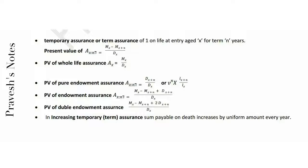PV of whole life assurance: Ax equals Mx divided by dx. PV of pure endowment assurance: A[x:n] equals D(x+n) divided by dx, or vⁿ × l(x+n) divided by lx.